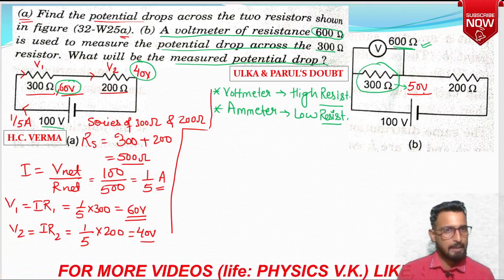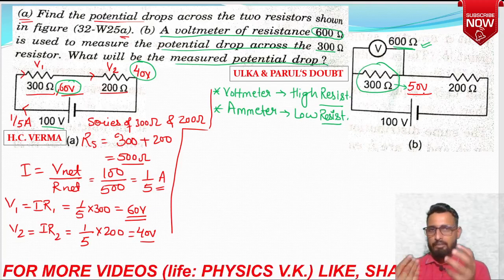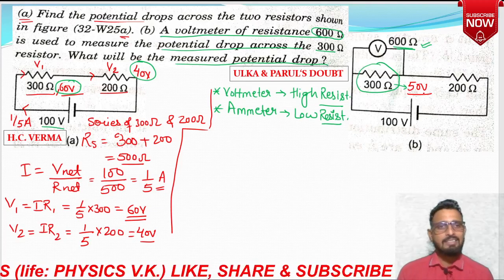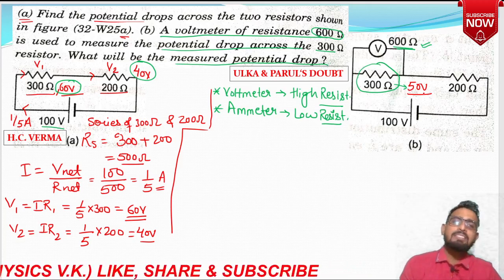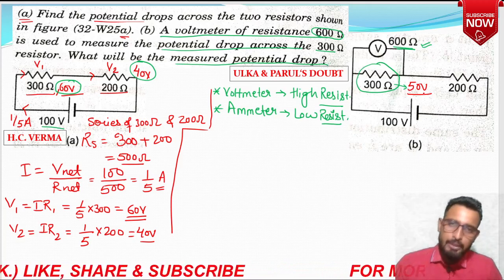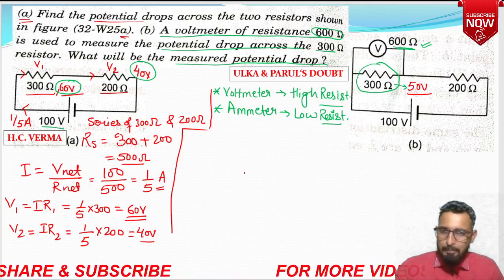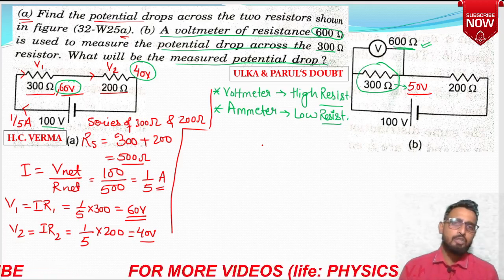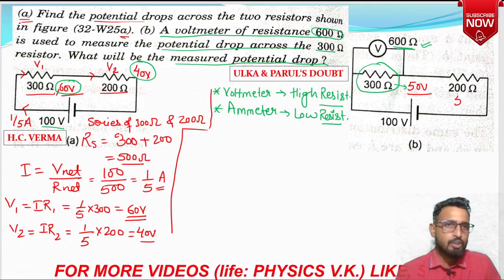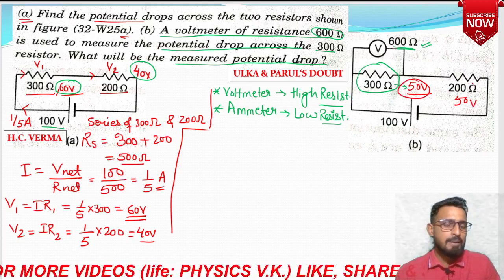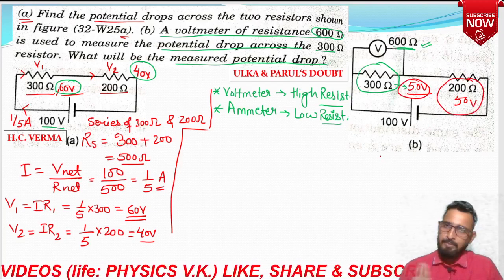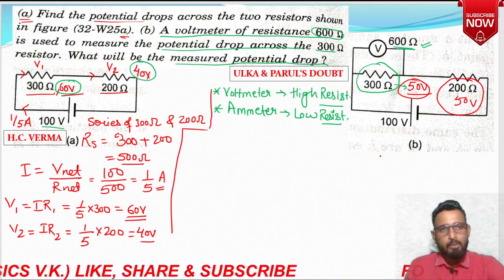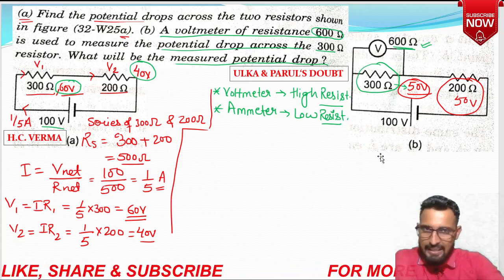The voltmeter is cost-effective and easy to operate — even a 10th class student can use it — but it has a small drawback. In Part A, voltage drop was 60–40 volt; in Part B it is 50–50 volt, totaling 100 again. I hope this cleared the doubts of Parul and Alka, and other students with similar doubts.